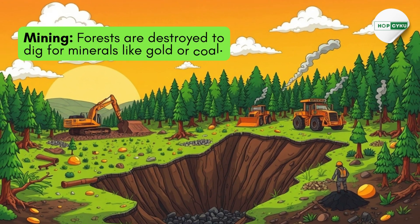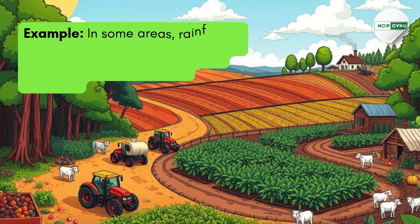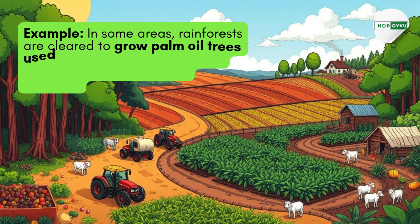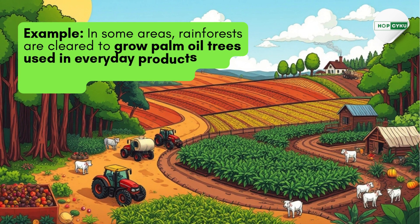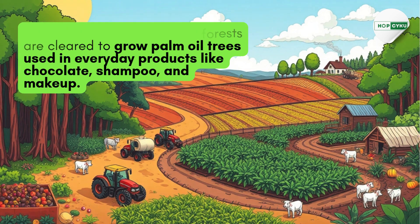4. Mining — forests are destroyed to dig for minerals like gold or coal. 5. In some areas, rainforests are cleared to grow palm oil trees used in everyday products like chocolate, shampoo, and makeup.